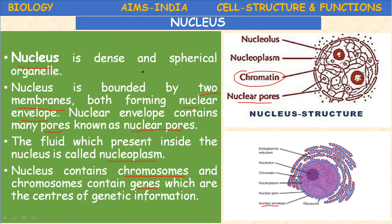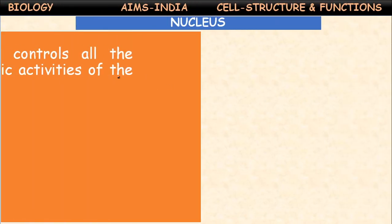The nucleus is a spherical organelle present in the center of the cell. It is visible with an ordinary microscope, but to study the total components of the nucleus you need an electron microscope. Since electron microscopes are not always available in laboratories, you can use already prepared mounted slides to observe the nucleus structure.